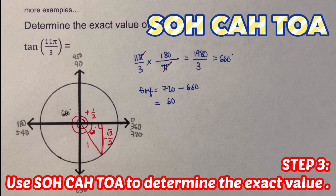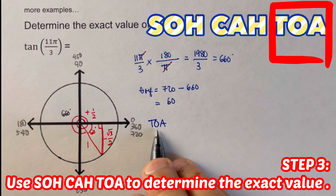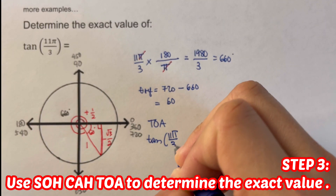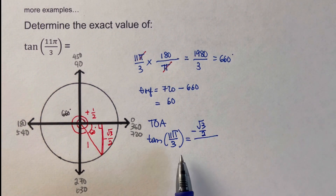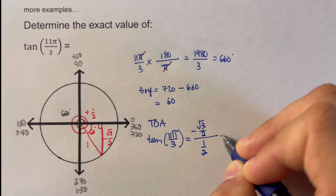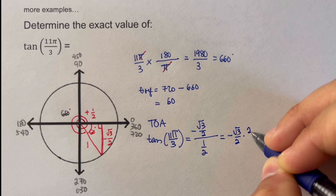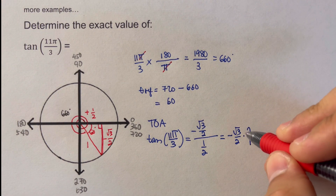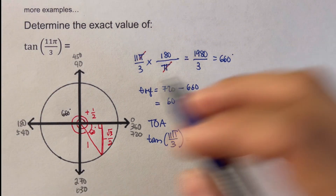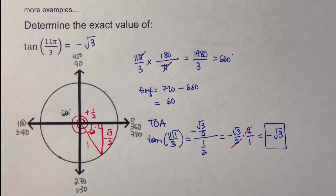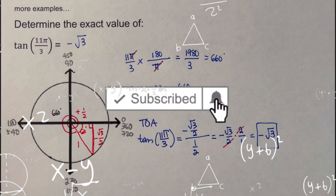The third step is to use SOH-CAH-TOA. Since this is tangent, we use TOA: opposite over adjacent. Tangent of 11π/3 equals (−√3/2) ÷ (1/2). This is a complex fraction, so we flip and multiply: −√3/2 × 2/1. The 2s cancel, giving us −√3. The exact value of tangent 11π/3 is −√3. Did you get the same answer? Good. If you find this video helpful, hit like and subscribe for more math videos!